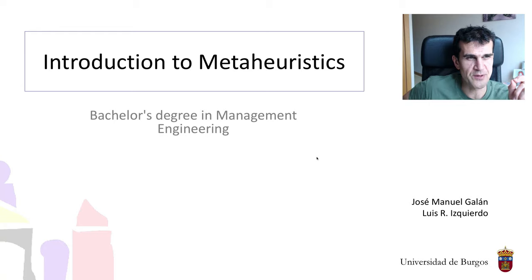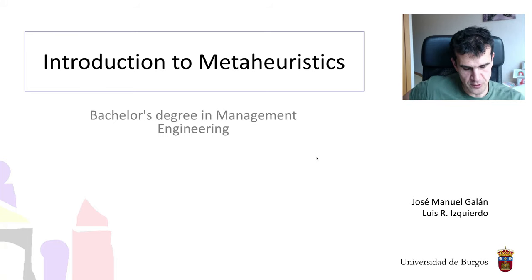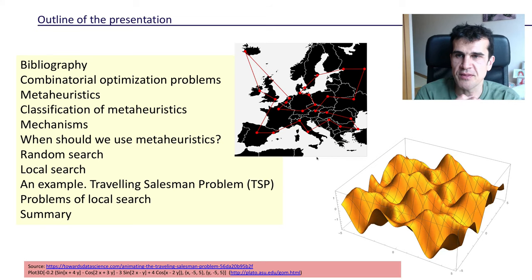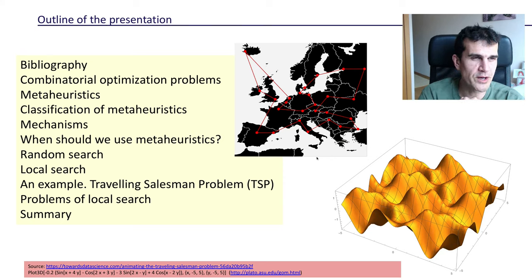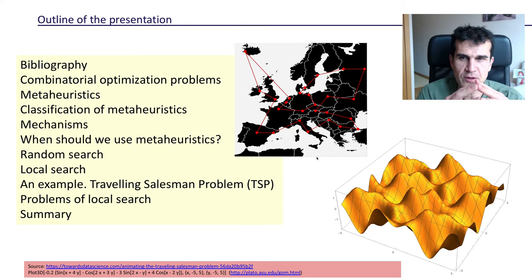That's the whole point of Metaheuristics. We're going to compromise on the quality of the solution in order to get a quick solution that will probably be good enough to fix the problem that we want to fix. The outline of the presentation is the one you can see on the screen. We're going to give you a few references that will be useful if you want to delve deeper into this topic. Then we're going to be more precise about the kind of problems we'll deal with, and these are combinatorial optimization problems.